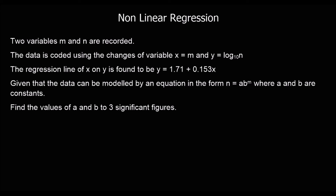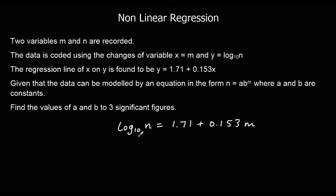Another question — you can pause the video and try this one, or just keep watching. Two variables, m and n this time, and again it's been coded to make it into a linear model. We're going to change it back into an exponential model. We're going to change y into log base 10 of n: log base 10 of n equals 1.71 plus 0.153m. To get rid of the log form, 10 is the base, the whole right side is the power, and it equals n. So n equals 10 to the power of 1.71 plus 0.153m.